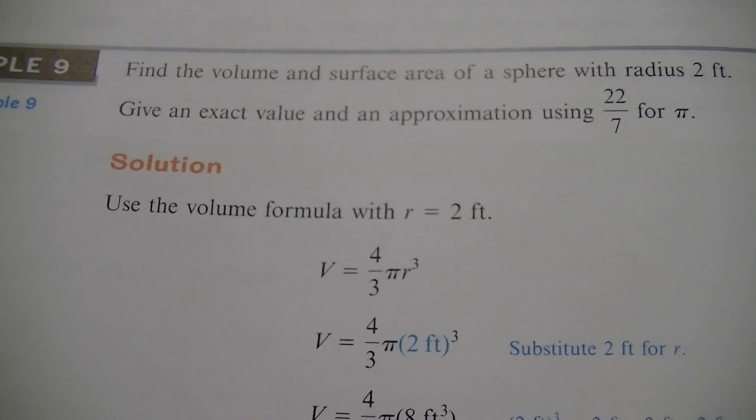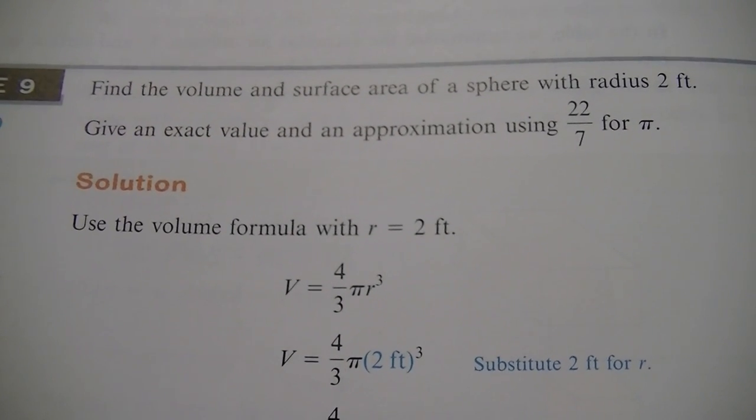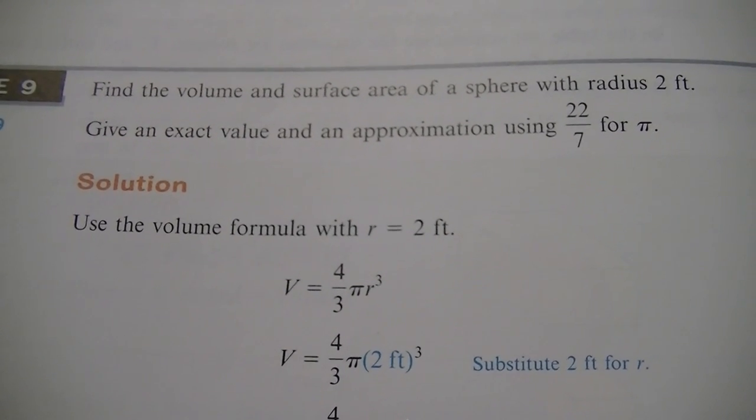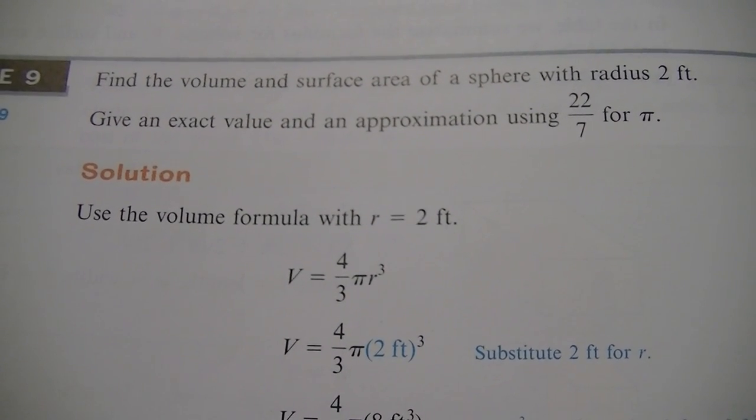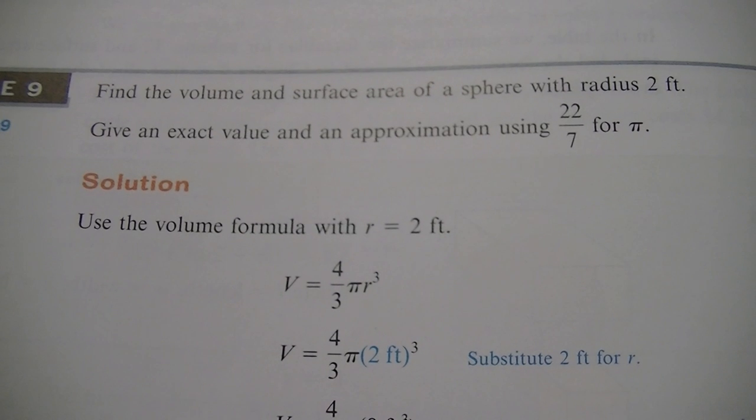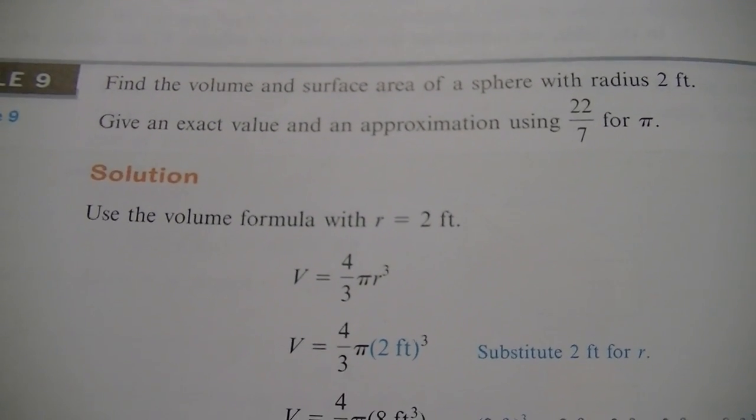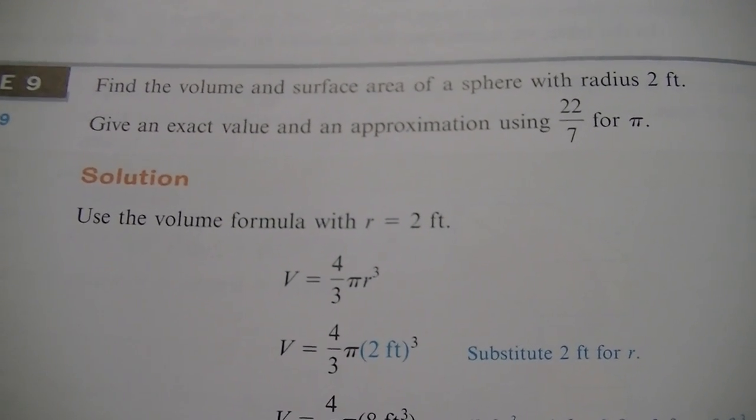All right, so today we're gonna find the volume and surface area of a sphere with a radius of two feet. Now remember, diameter goes all the way across, radius is half of that. So if we're going the whole way across, it'd be four feet; half that's gonna be two feet for the radius. We'll give an exact value and an approximation using 22 over 7 for pi, that gives approximately 3.14.